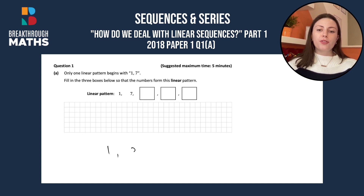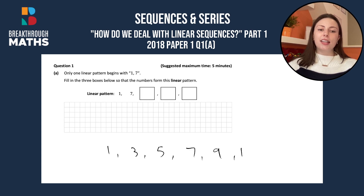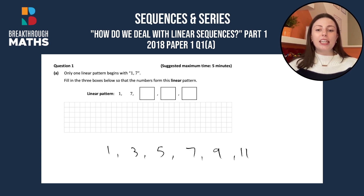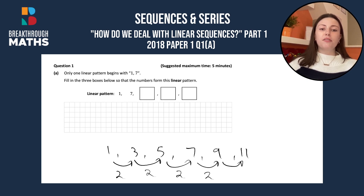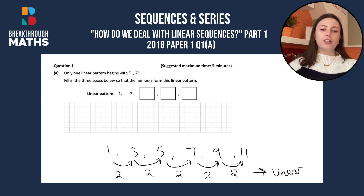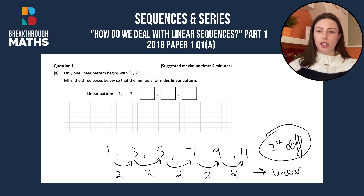So let's say we had 1, 3, 5, 7, 9 and 11. What we do is we find the difference between each term. The difference between 1 and 3 is 2, between 3 and 5 is 2, 5 and 7 is also 2, 7 and 9 is also 2, and obviously the difference between 9 and 11 is also 2. So this is a linear sequence or pattern because the first difference is the same between each term.